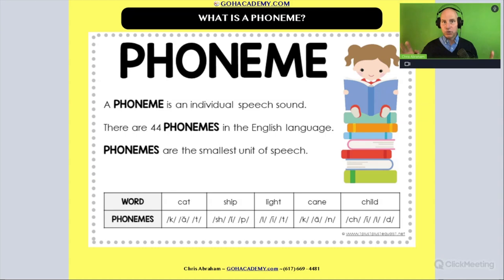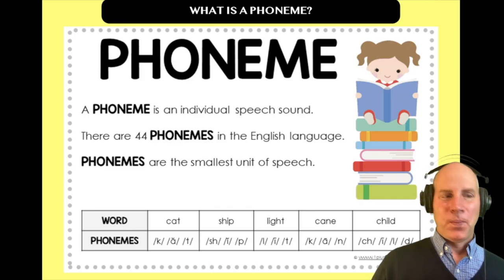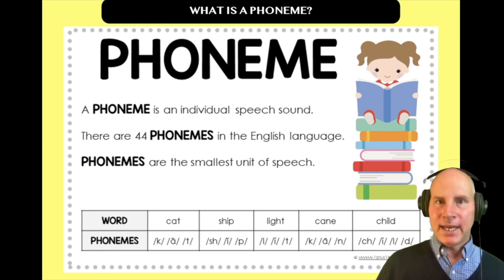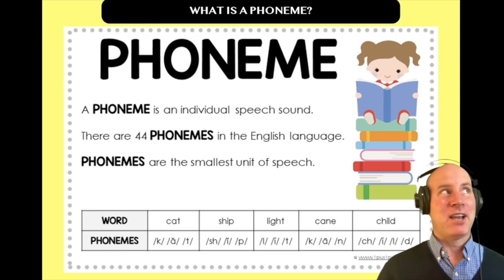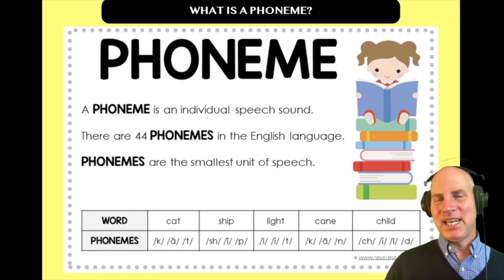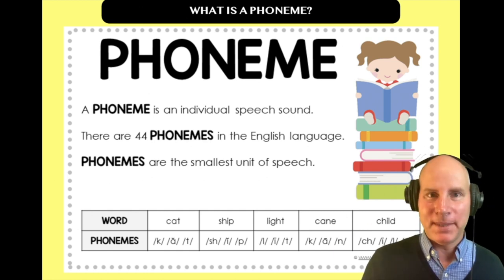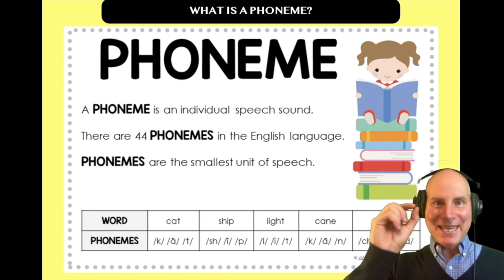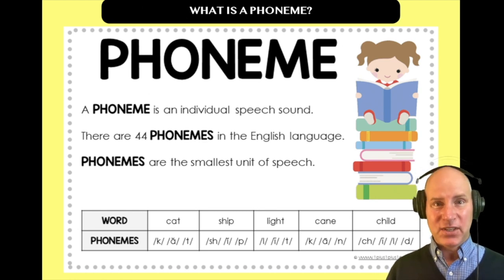So let's define two words. The first word is a phoneme. If you've been doing foundations of reading or any type of reading development and you've taken a class, you came across the word phoneme. When you first heard it, you didn't know what phoneme meant. But if you've taken a lot of these classes and you've been around for a while, you know what a phoneme is — it's second nature. A phoneme is an individual speech sound. In the English language, there are 44 distinct speech sounds.